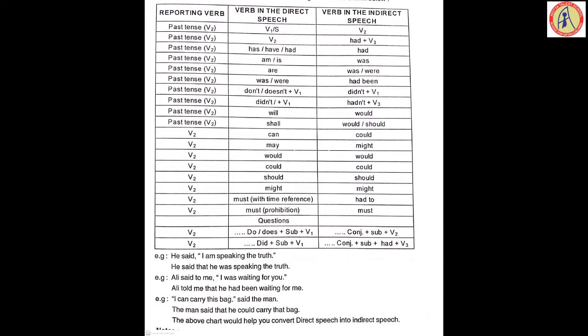For question forms: 'do/does + subject + V1' becomes 'conjunction + subject + V2'. 'Did + subject + V1' becomes 'conjunction + subject + had + V3'.